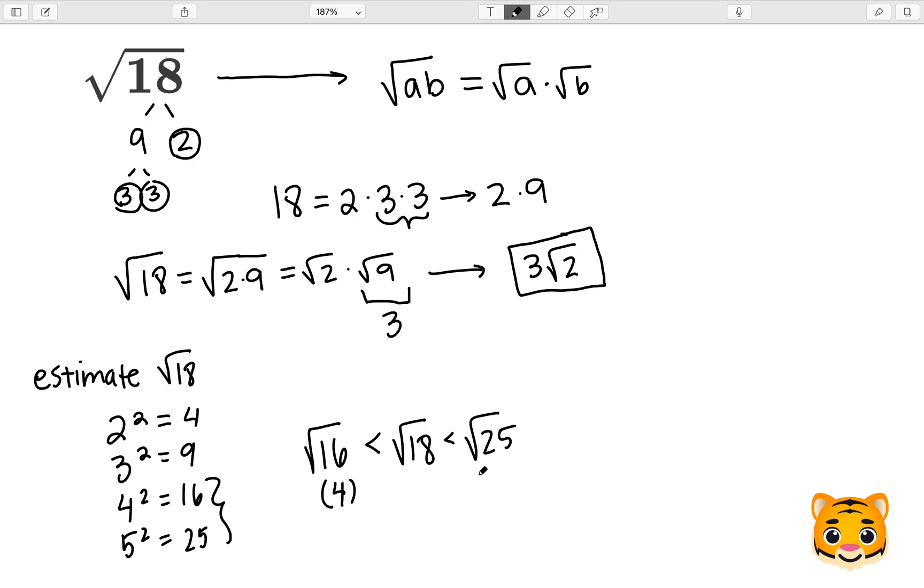And we know the square root of 16 is 4, the square root of 25 is 5, so then we can write 4 is less than the square root of 18, which is less than 5.